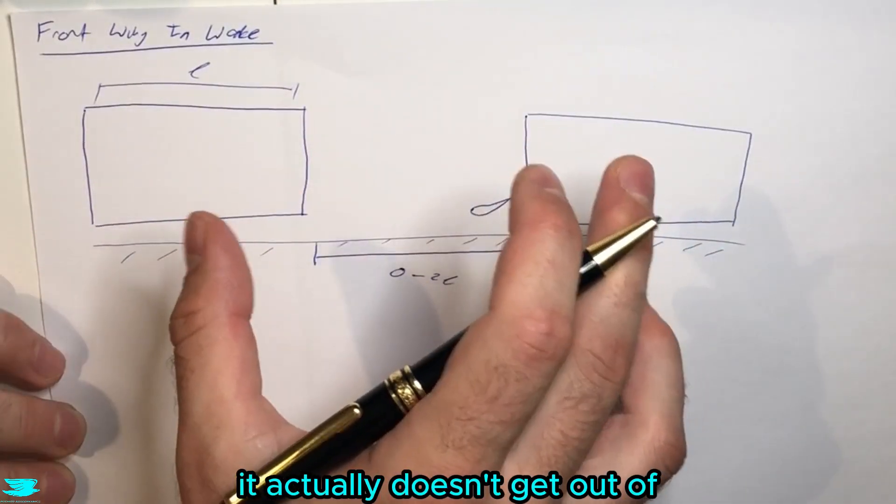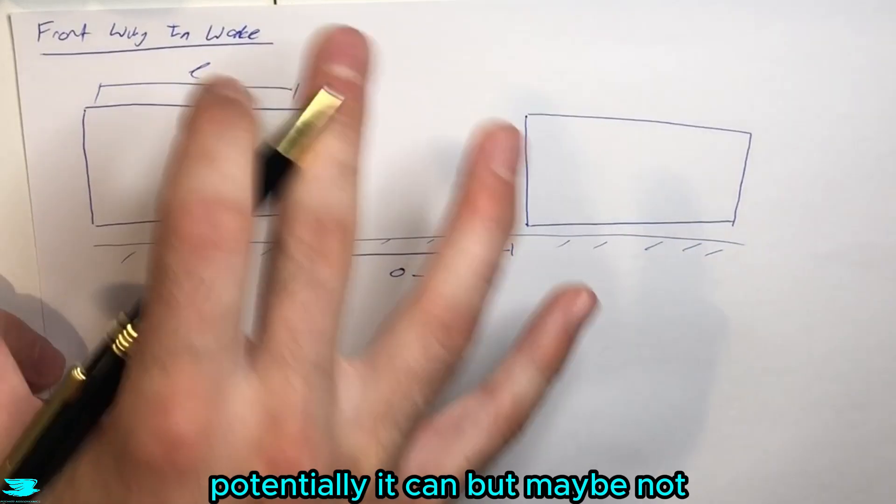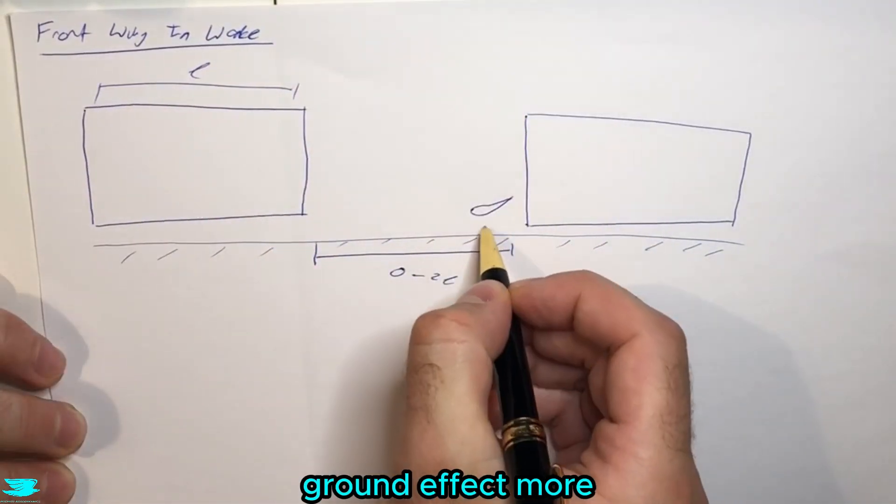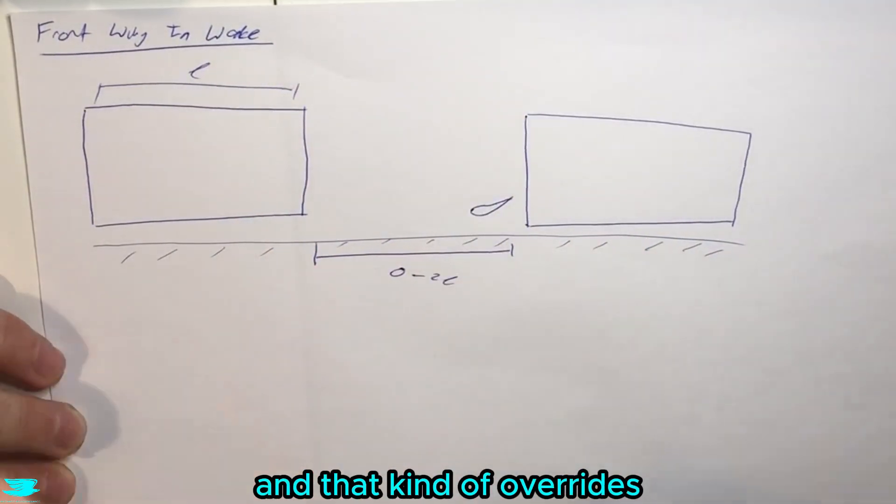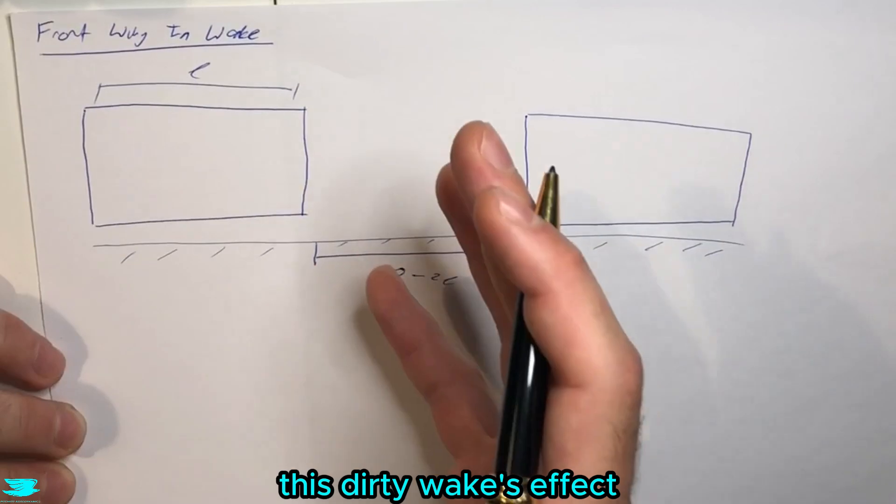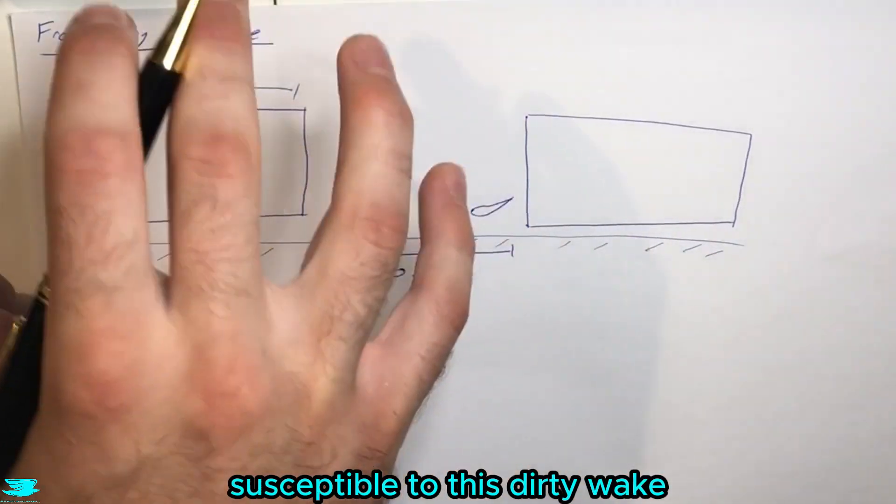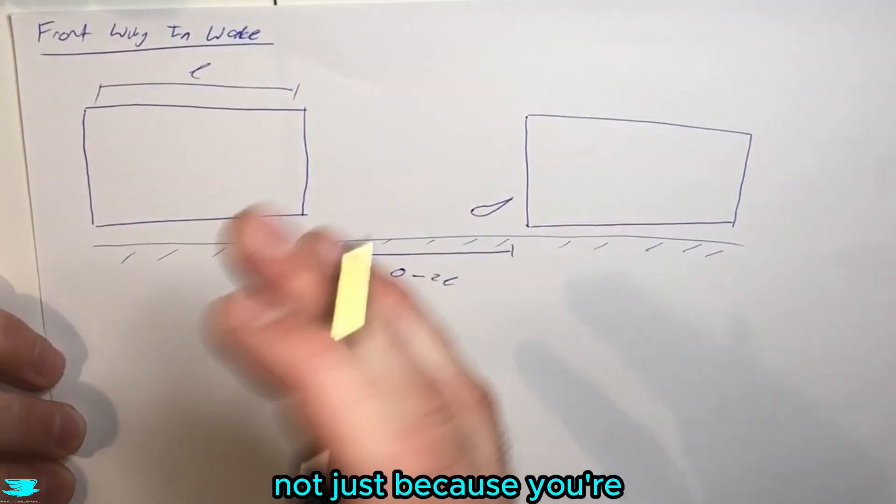If you put this wing closer to the ground, it actually induces this ground effect more and that kind of overrides this dirty wake's effect. So you then start to become less susceptible to this dirty wake by putting it lower, not just because you're getting out of it but also because you're inducing this ground effect.